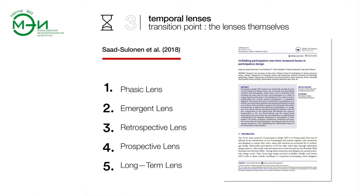Following a special issue review of participatory design literature, Solanki et al. provide a noteworthy foundation for the use of temporal lenses in understanding how participation unfolds across time. They offer five temporal lenses to enable this formal understanding: the phasic, momentary, retrospective, prospective, and long-term lenses. Whilst it is beyond the scope of the presentation to fully interrogate this literature, these lenses can be summarised and we can begin building a preliminary overview of their respective suitabilities for ongoing live project research.